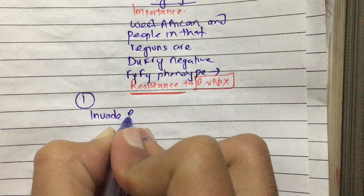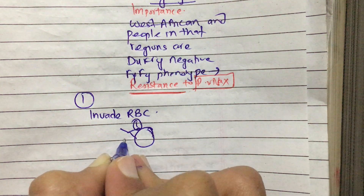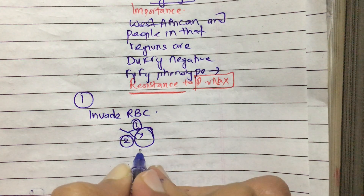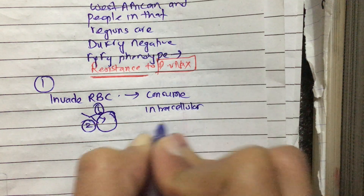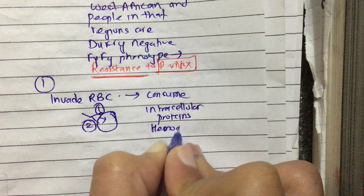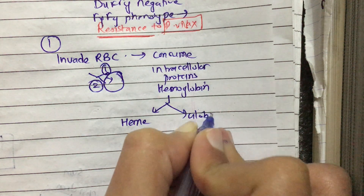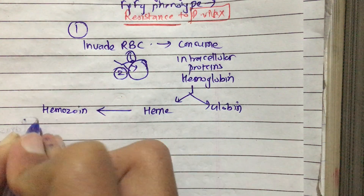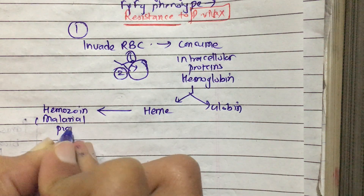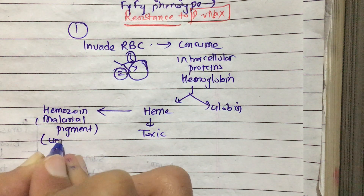After binding via glycophorin A or erythrocyte binding antigen 175, the parasite invades the RBC. Inside the RBC it consumes intracellular proteins, primarily hemoglobin. This hemoglobin is broken down into heme and globin.